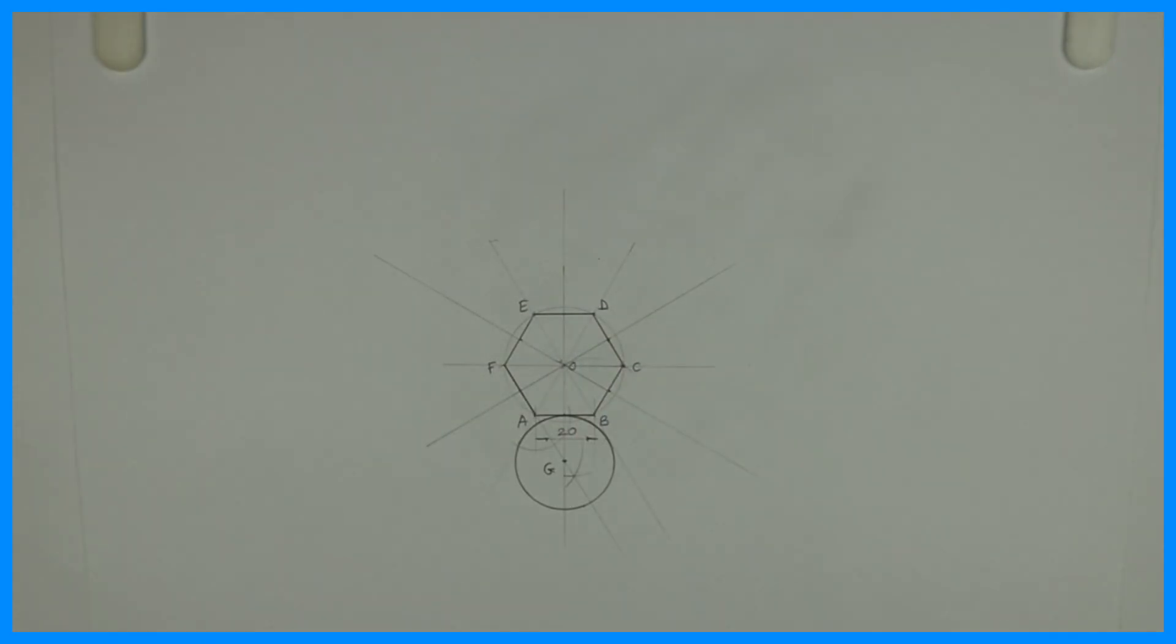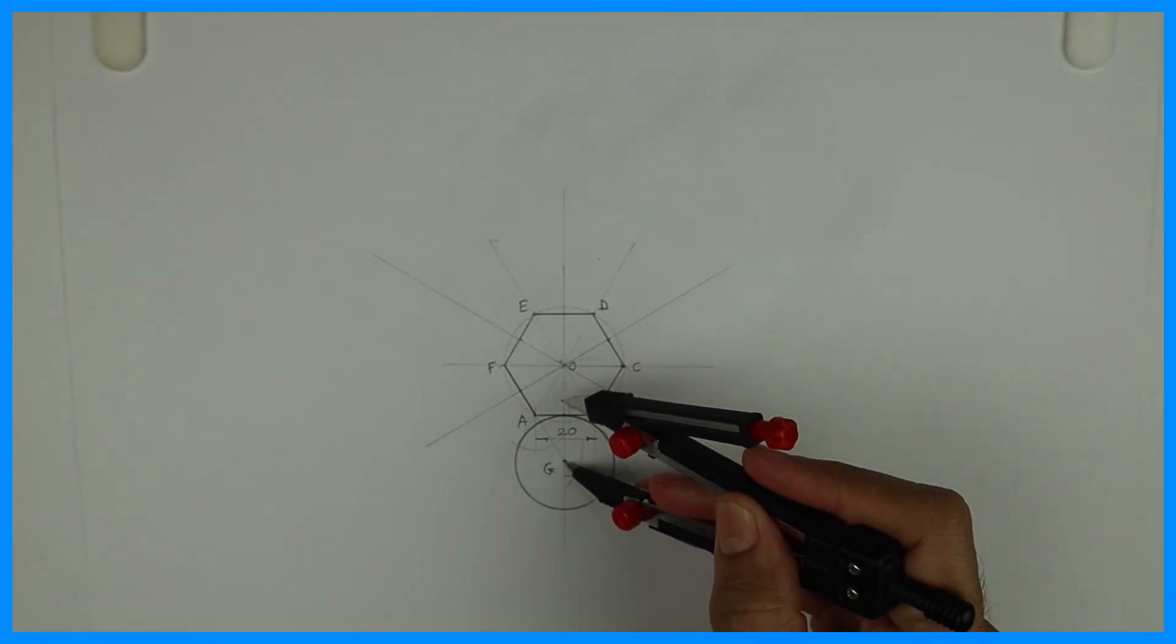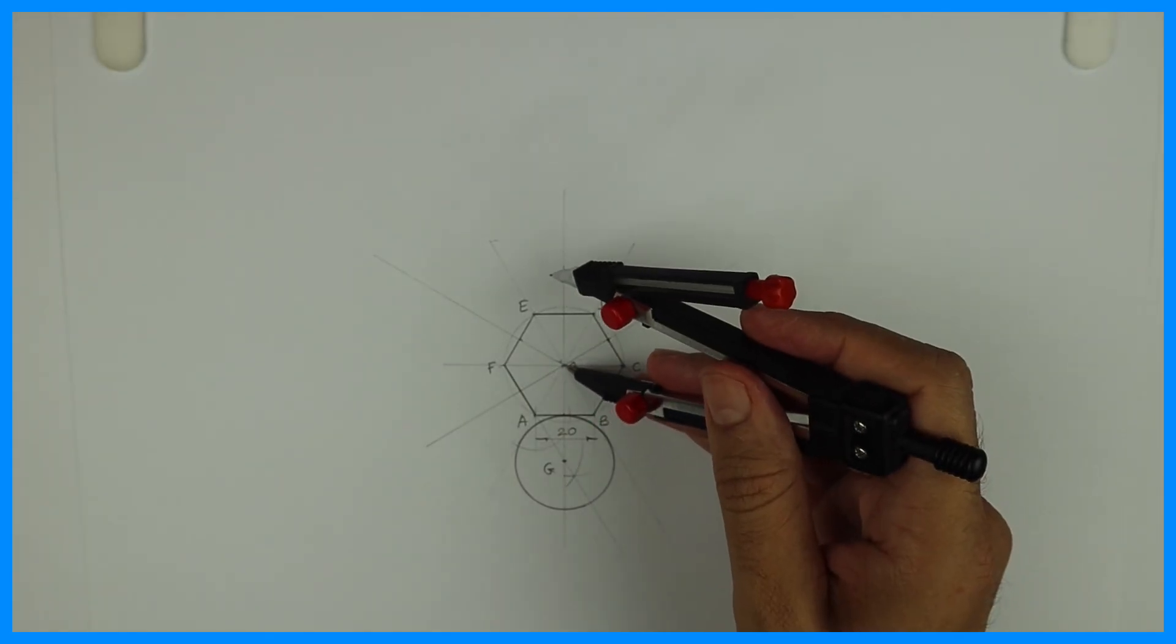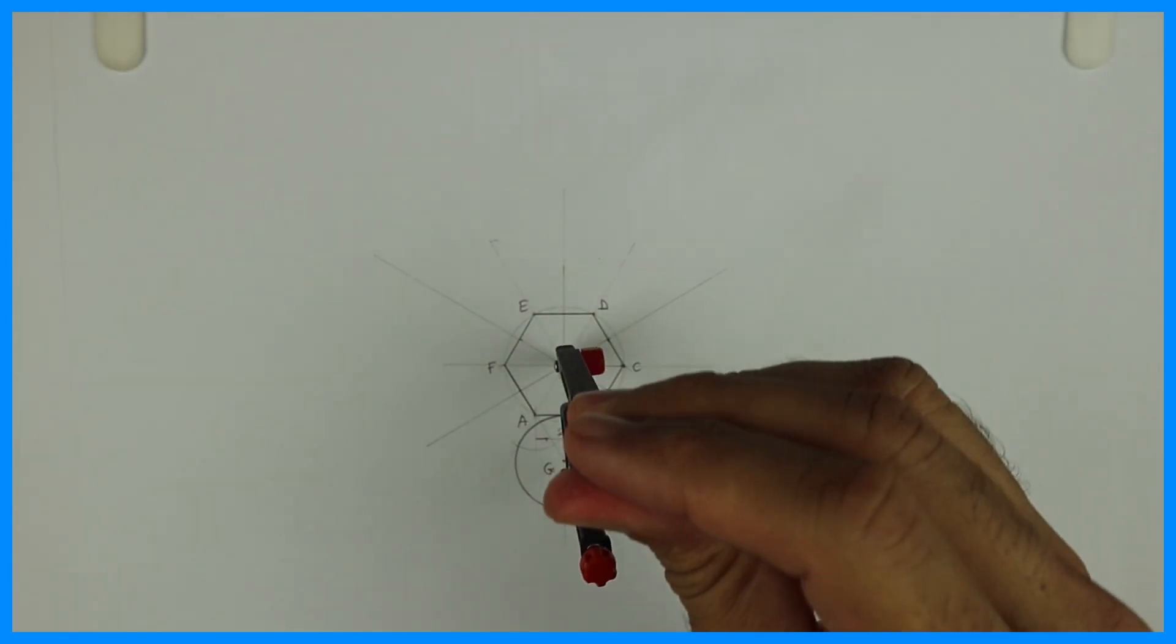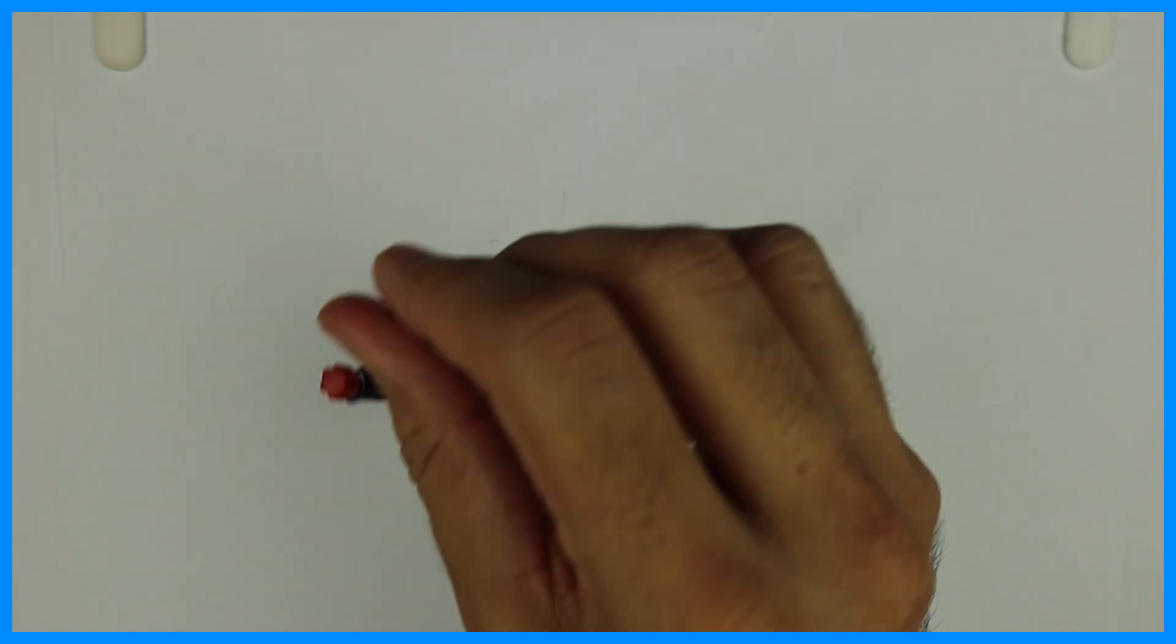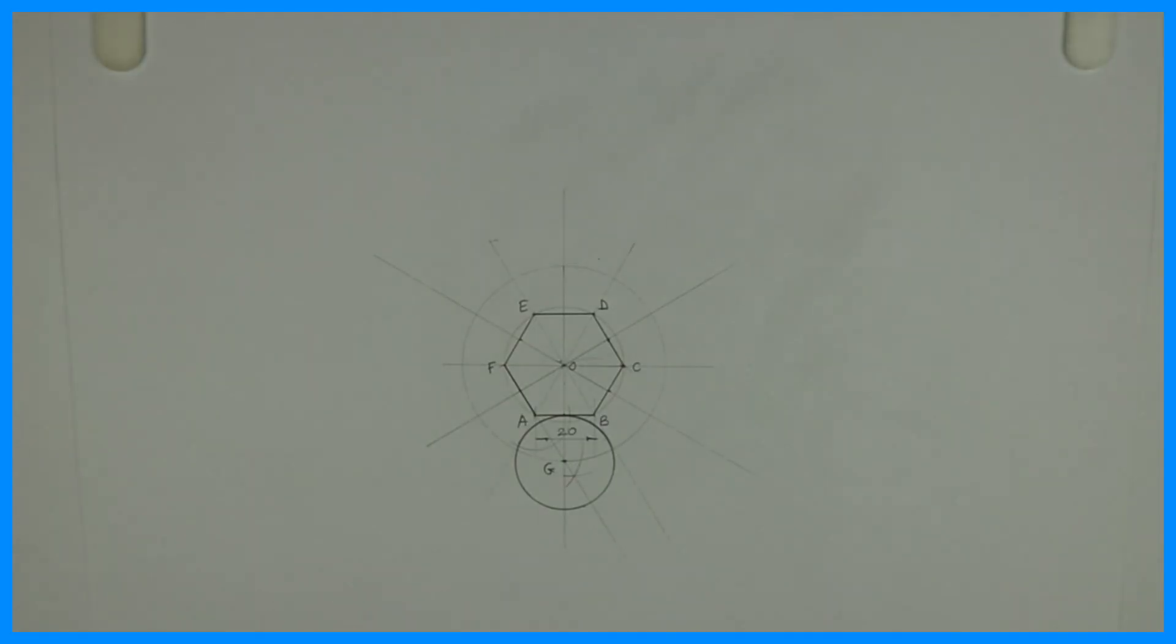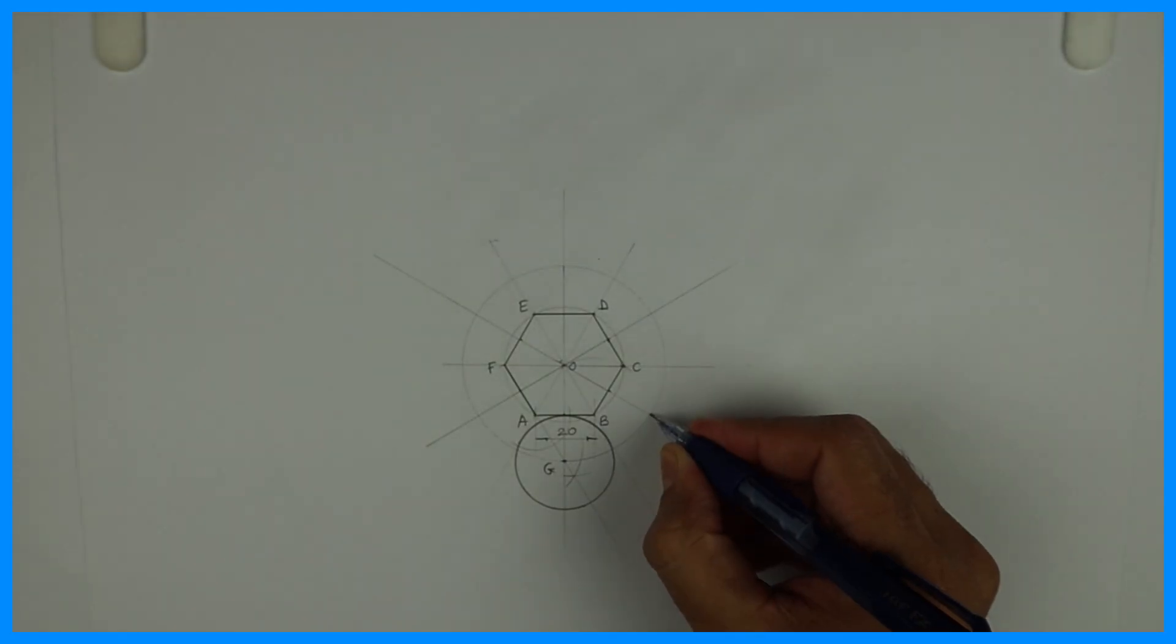This is point O. Take O to G and draw circles, so you'll get the required points, the required centers for all those circles.